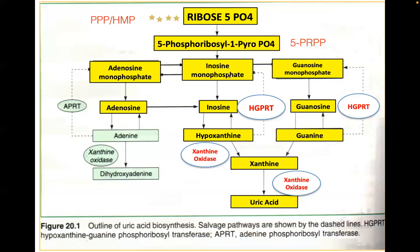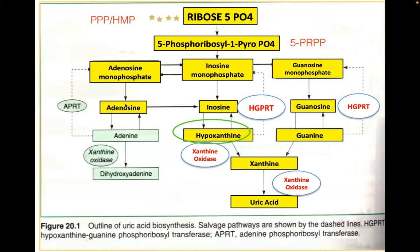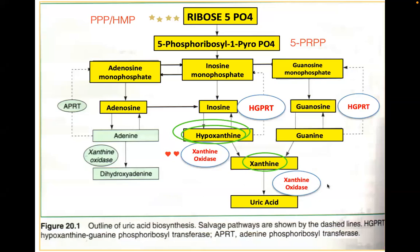IMP can be converted to GMP and then to guanine; AMP (adenosine monophosphate) to adenosine, and adenosine becomes inosine. The common product is hypoxanthine. Hypoxanthine is converted to xanthine by xanthine oxidase; xanthine is then converted to uric acid — also by xanthine oxidase.